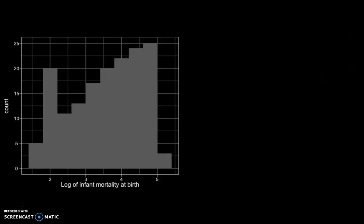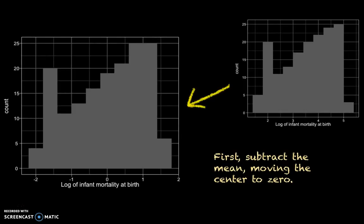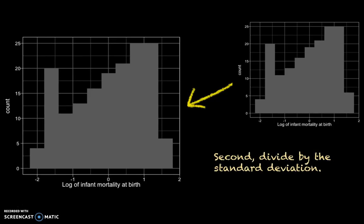We can do the same for the log of infant mortality. We first subtract the mean so that the variable, which originally went from 2 to 5, now goes from minus 2 to about 2, with zero at the mean position. The second step is to divide by the standard deviation. As it happens, the standard deviation of the log of infant mortality was practically 1 — 0.99 — so dividing does not change much, but strictly speaking we need to do this. A score of 1 now means one standard deviation higher infant mortality, and minus 1 means one standard deviation lower.